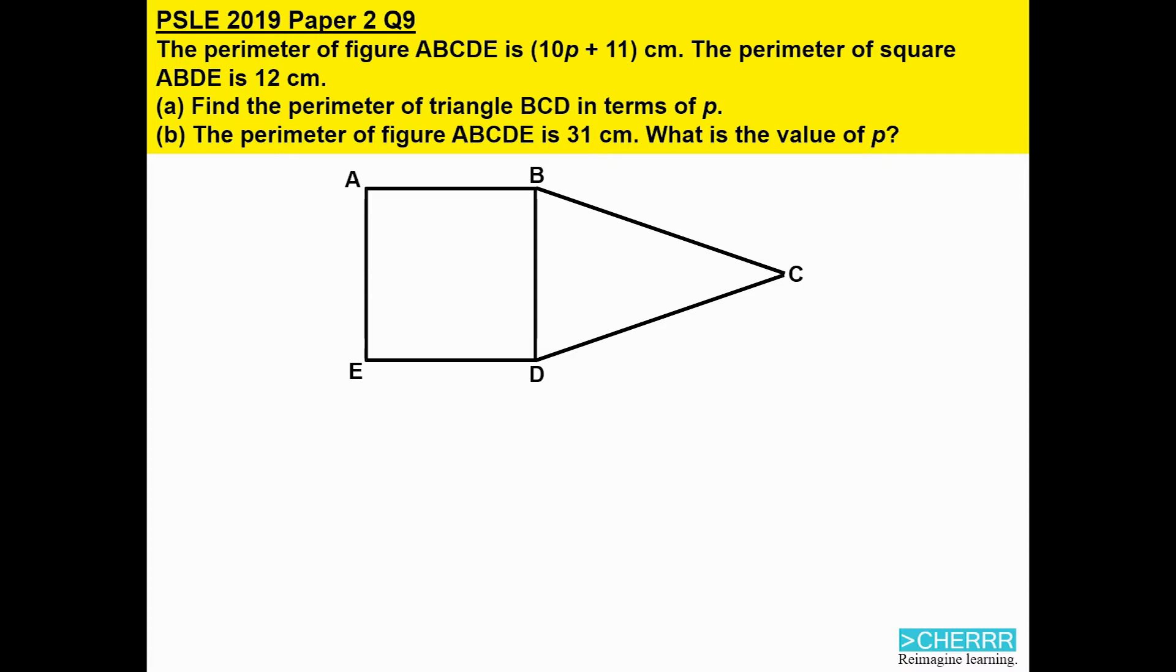PSLE 2019 Paper 2 Question 9: The perimeter of figure ABCDE is (10p + 11) centimeters. The perimeter of square ABDE is 12 centimeters. (a) Find the perimeter of triangle BCD in terms of p. (b) The perimeter of figure ABCDE is 31 centimeters. What is the value of p?